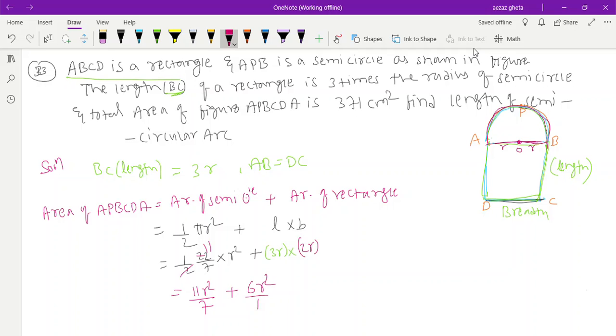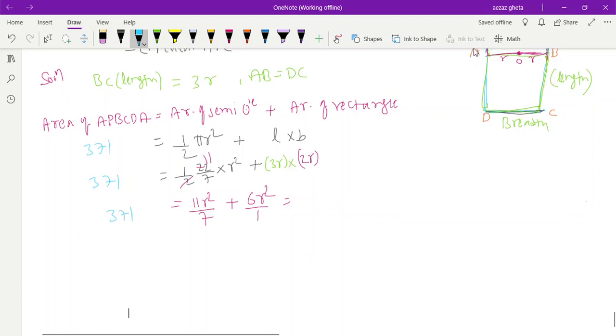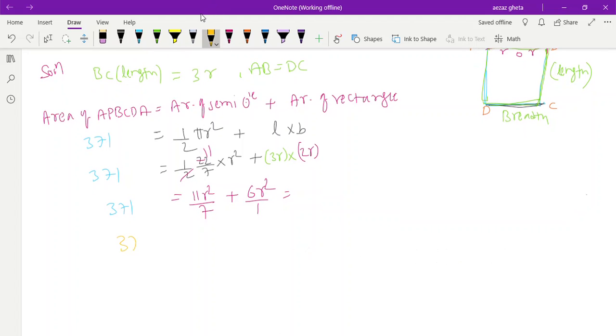You know the area is given as 371. If I take LCM here, 7 × 1 × 7 = 11r² plus 42r². Cross multiply: 7 × 371 = 2597, so 2597 = 53r². r² equals 2597 divided by 53. If you cancel and divide, r² equals 49, so r equals √49, which equals 7 cm.